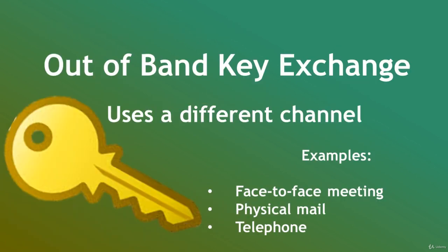The solution to this would be to use an out-of-band key exchange. This simply means that Amy and Bill can use a different channel that they both trust. For example, if they are familiar with each other's appearance, they may arrange a face-to-face meeting at a local coffee shop. Or if they are familiar with each other's voices, they may call each other. These options, however, present their own set of challenges. For example, what if Amy and Bill live in two different cities? Arranging a face-to-face meeting in that instance would not be feasible.